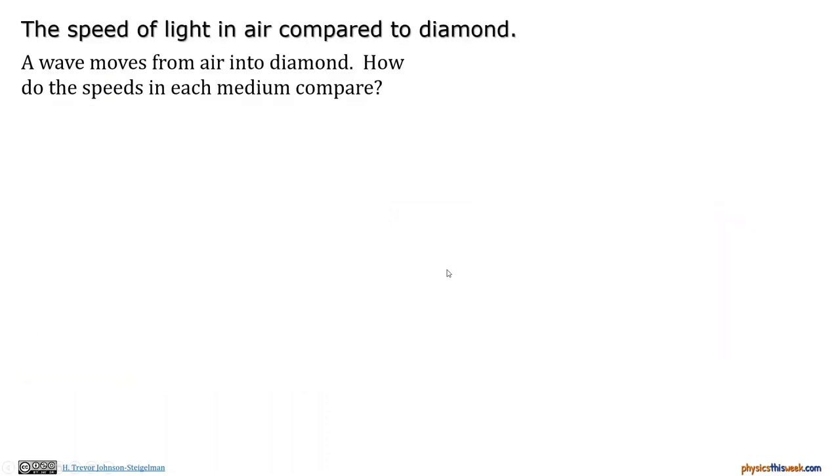So if we take a look at a specific example here with air going into diamond, we want to know how the speeds compare. We're going to look off of that table and pull out to several decimal places, four significant digits in this case, to get n of air equals 1.000. The n of diamond equals 2.419. And the speed of light is equal to, of course, 2.998 times 10 to the eighth meters per second.